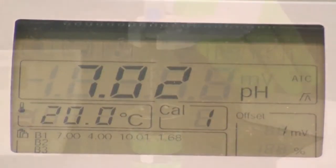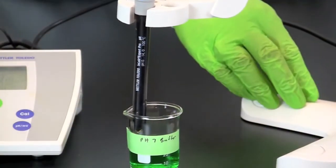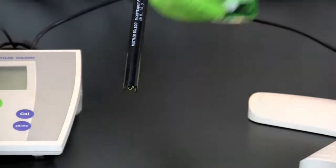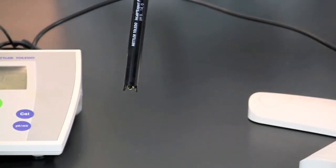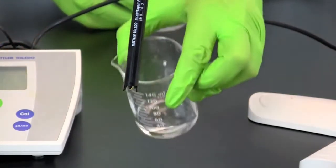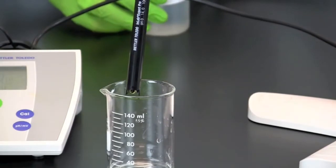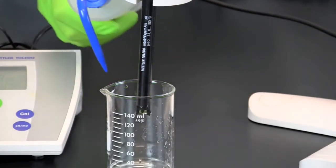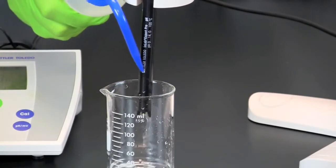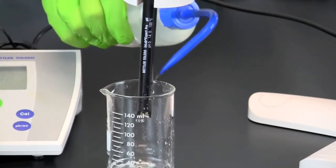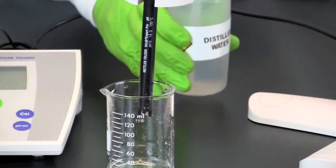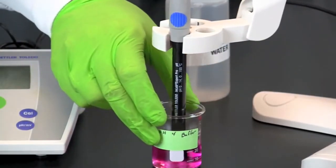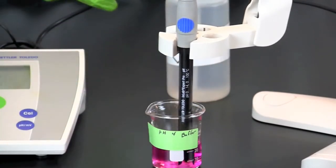Once the standard has been calibrated, you will need to remove the sample and rinse the electrode with distilled water. Repeat the process again, this time using the standard with a pH of 4.